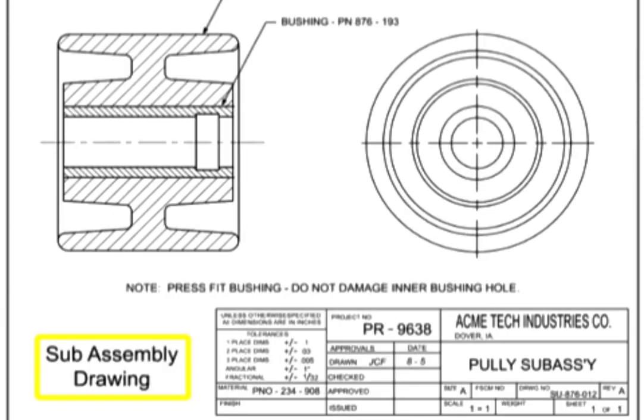Subassembly drawings are made of two or more separable items that join to form a subassembly that is then used on a higher level assembly. Subassembly drawings are useful for smaller assemblies that may go on multiple end products, such as a hydraulic valve that goes on many different tractors. One of the differences between an assembly and subassembly is that a subassembly typically has the use-on or next higher assembly called out, either in the title block or in the notes section.